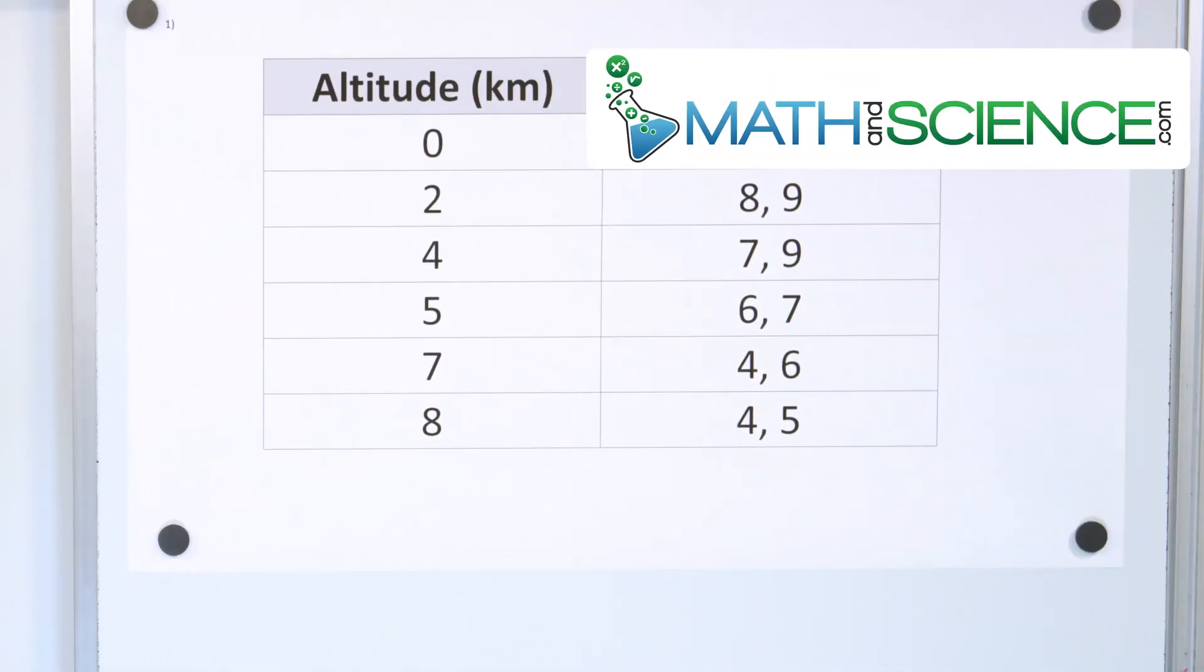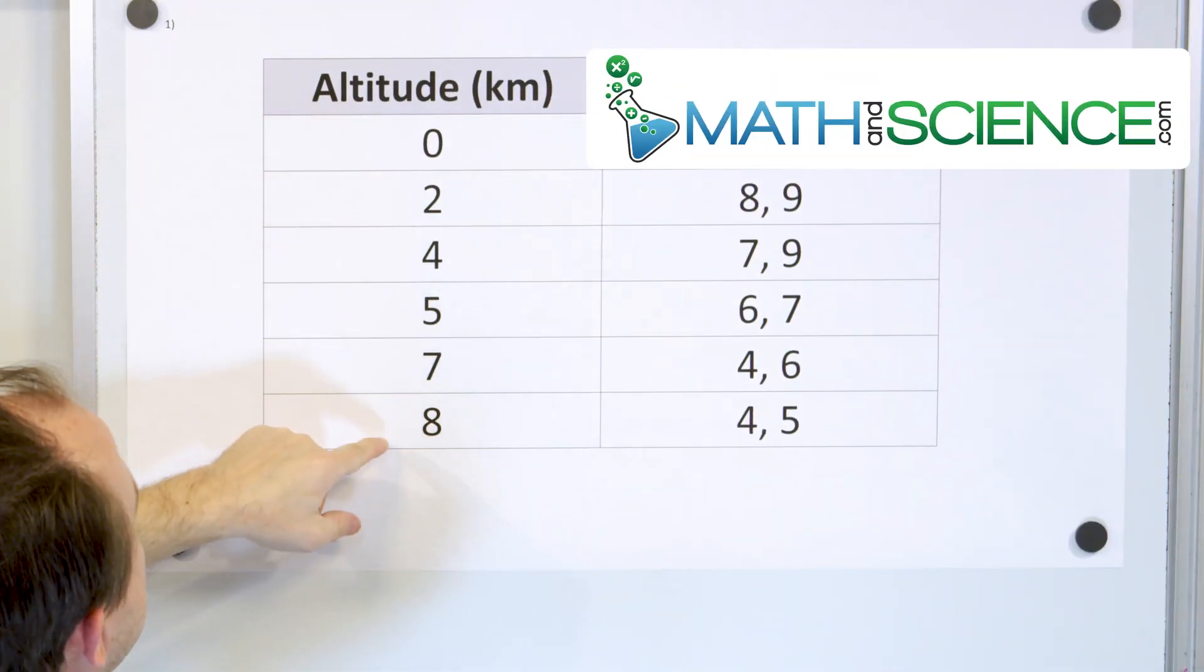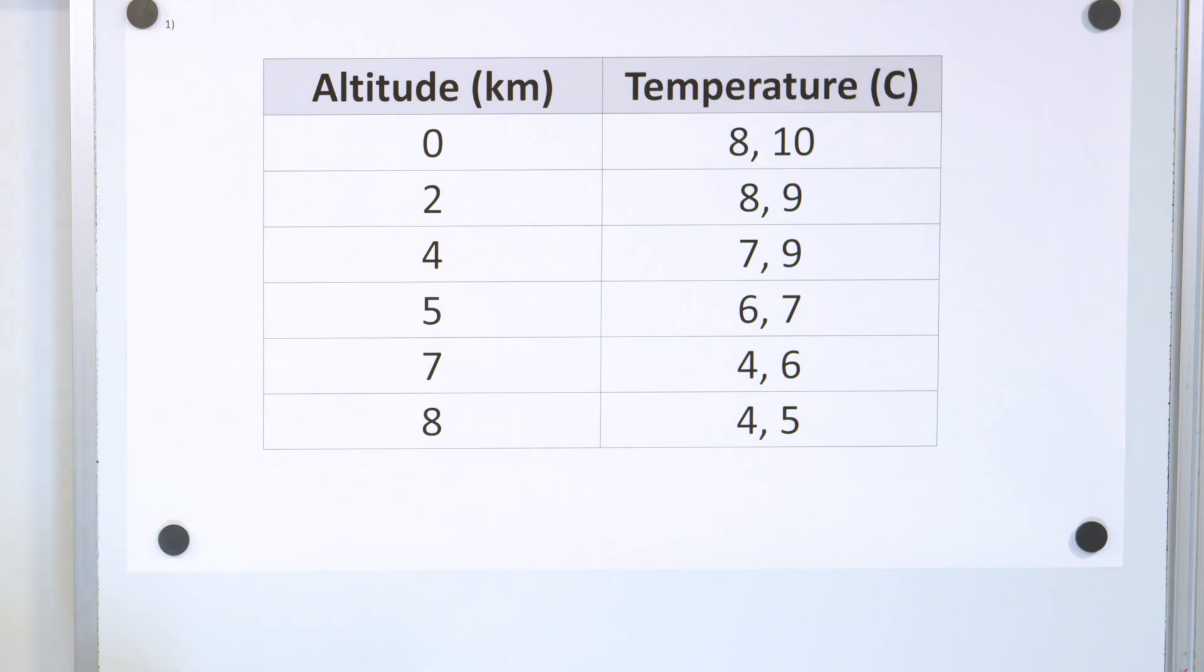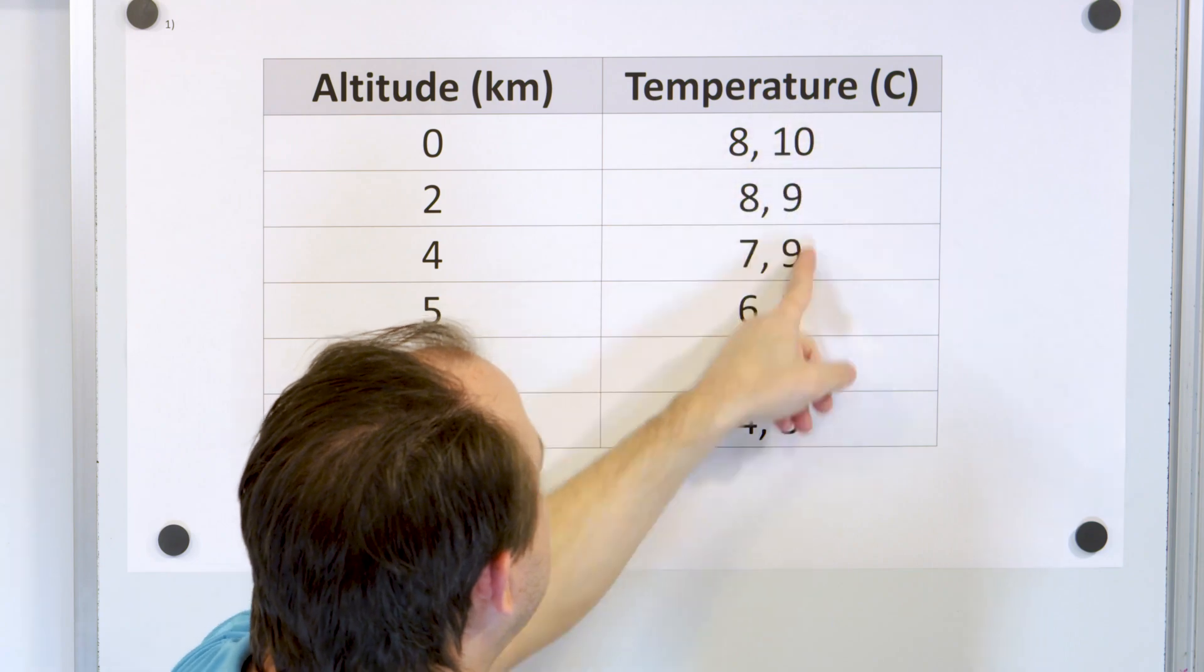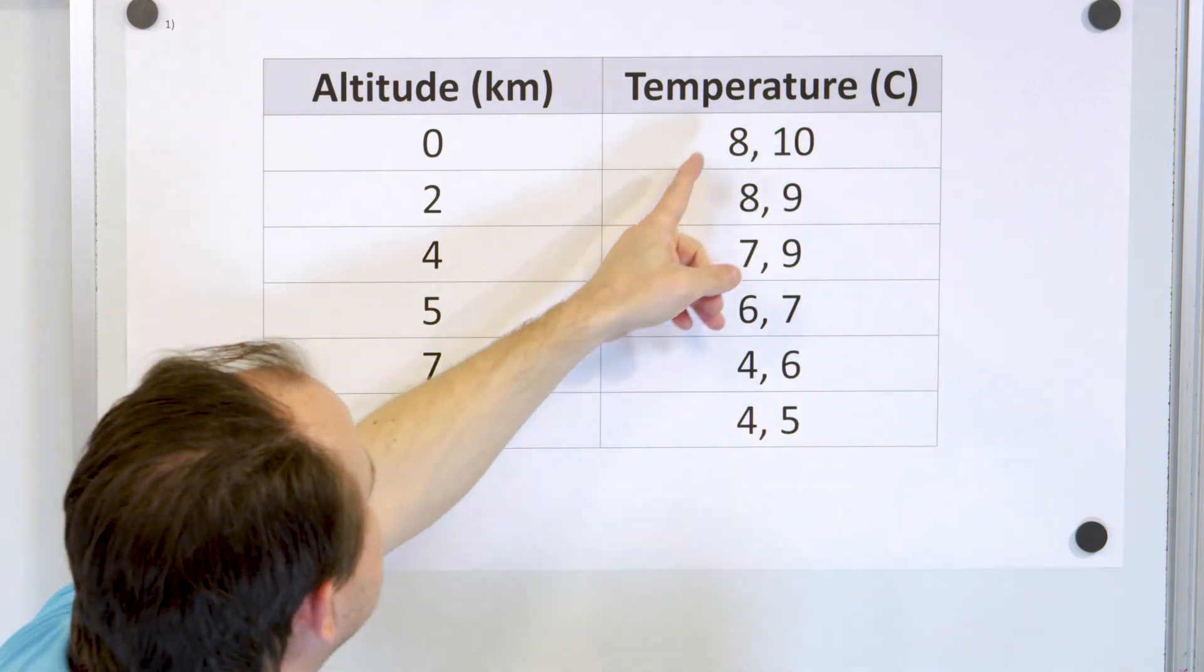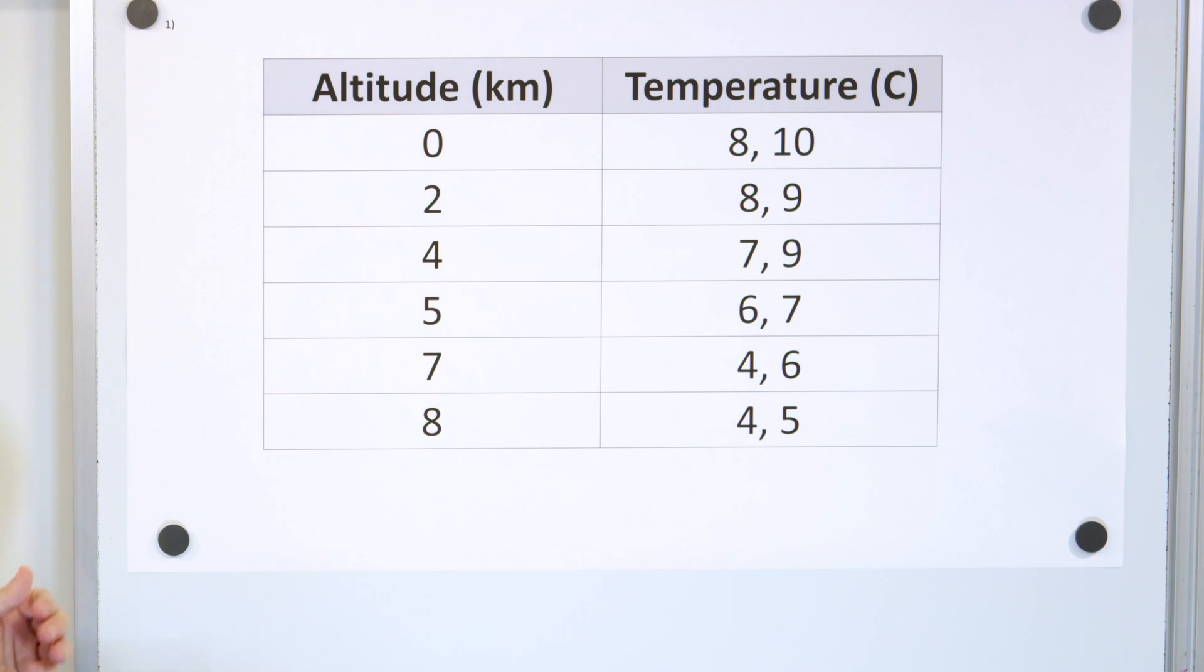So let's take a look at problem number one. Here we have the altitude up the side of a mountain and the temperature recorded, and we're doing it for two different mountains. So we really have two different columns of data. You could think of this as mountain number one, mountain number two.